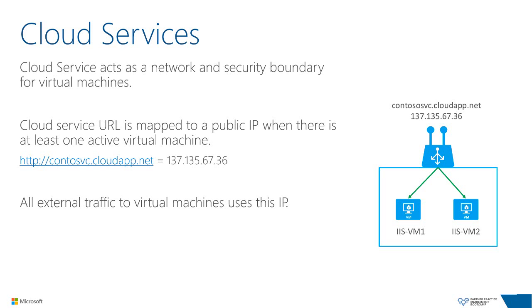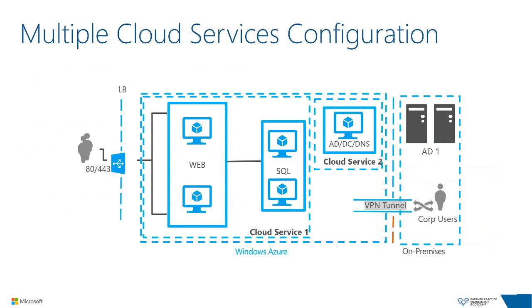Now let's look at how this is architected behind the scenes. A cloud service is a container for virtual machines that provides a network and security boundary. It's addressable via a URL like contososervice.cloudapp.net mapped to a public IP address. Virtual machines have full networking connectivity to other VMs in the same cloud service but cannot communicate directly with VMs in separate cloud services by default. To enable cross-cloud-service communication, deploy those cloud services into the same virtual network.